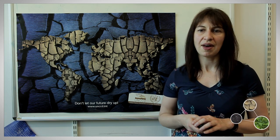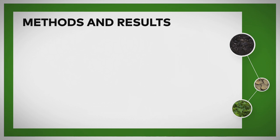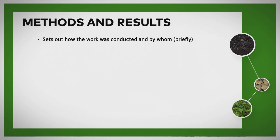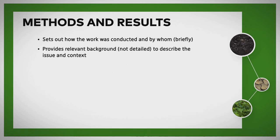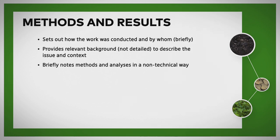The next section is methods and results, which sets out the how — how the work was conducted — but also the whom: who collected the data. Don't get bogged down in detail. Provide relevant background information to describe the key points of the issue and the context. Briefly note the methods and analyses, but make sure it's done in a non-technical way — understandable to the average person, accessible and easily understood.